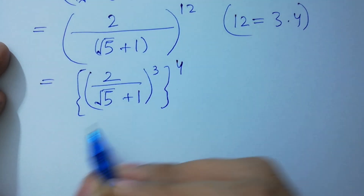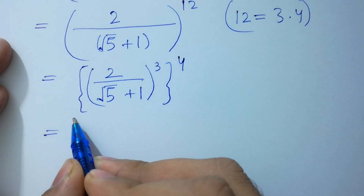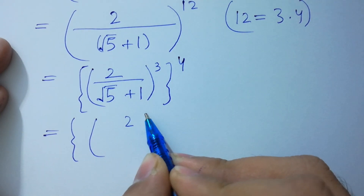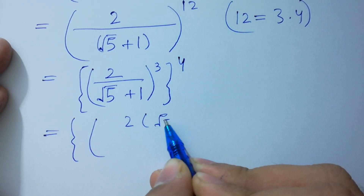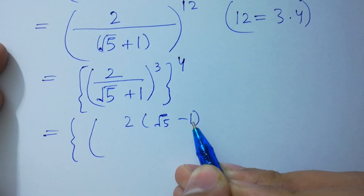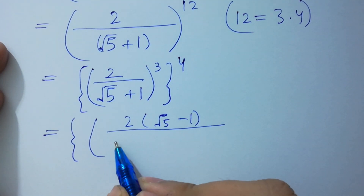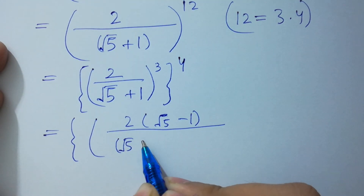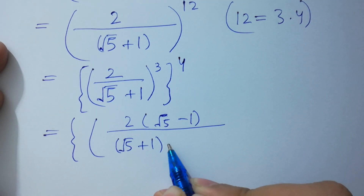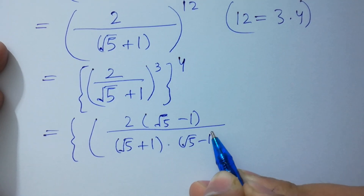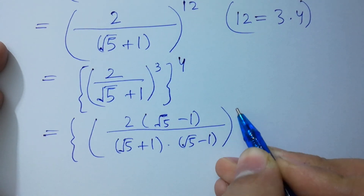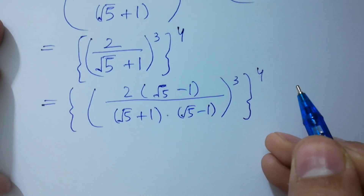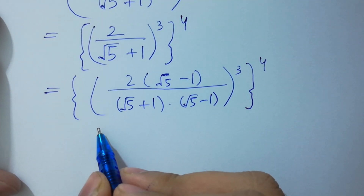By rationalizing, we have 2 times (square root of 5 minus 1), over (square root of 5 plus 1)(square root of 5 minus 1), to the power 3, to the whole power 4.